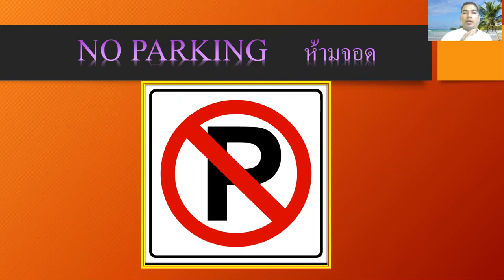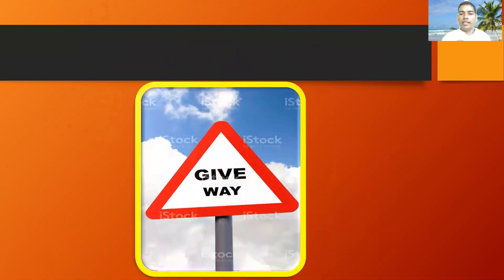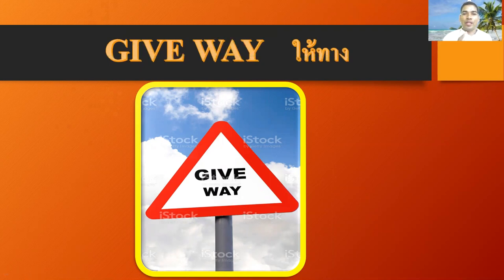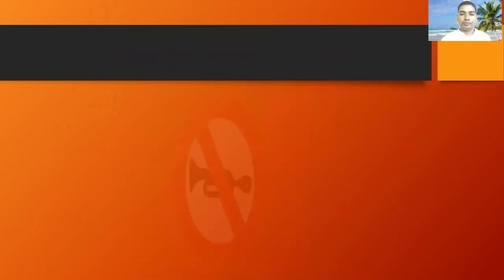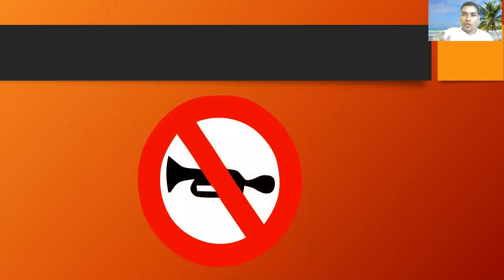If you see this type of sign on the road, you must understand it means give way. For example, if an ambulance is coming from behind you, you must give way for the ambulance. If you see this type of sign, you understand: give way.